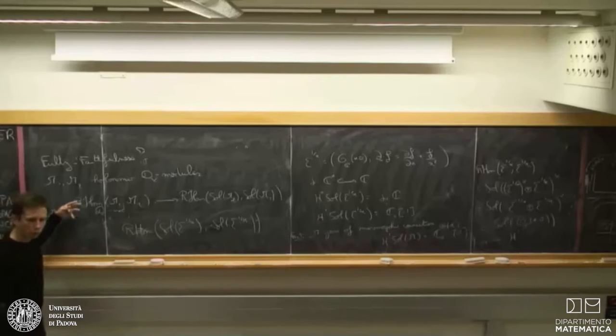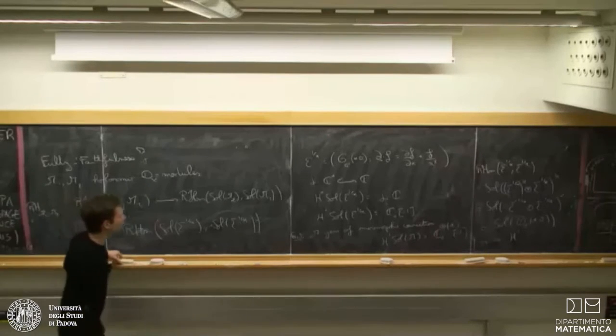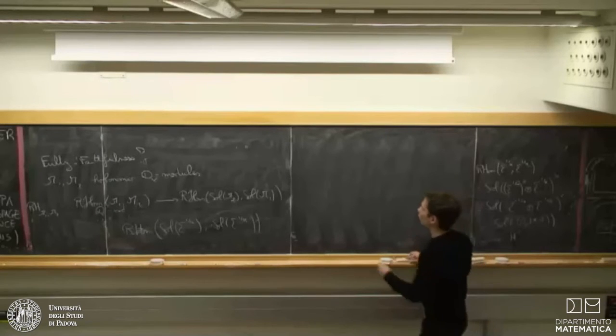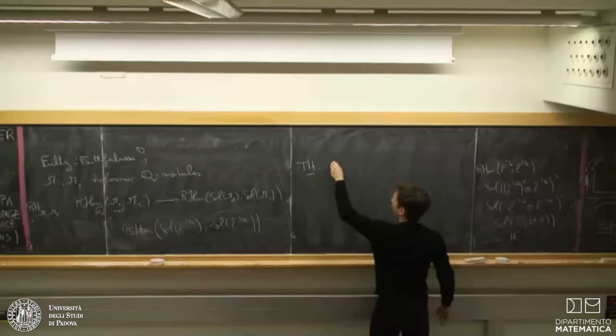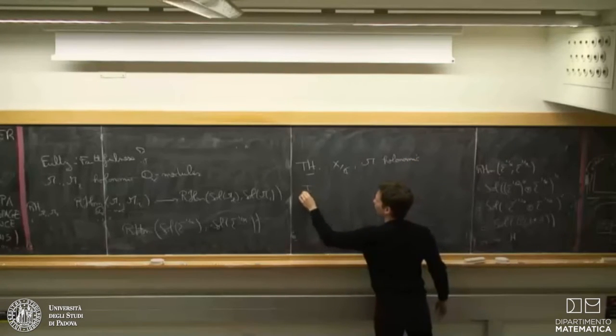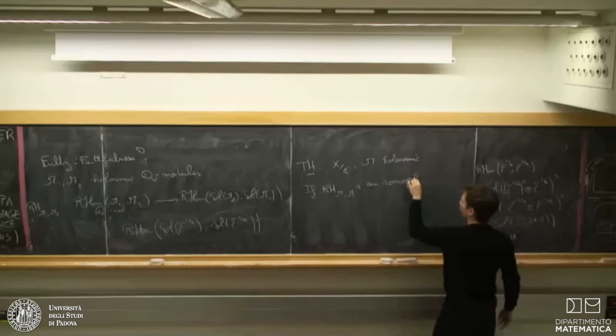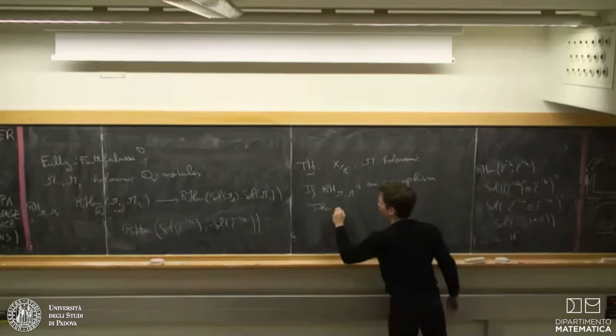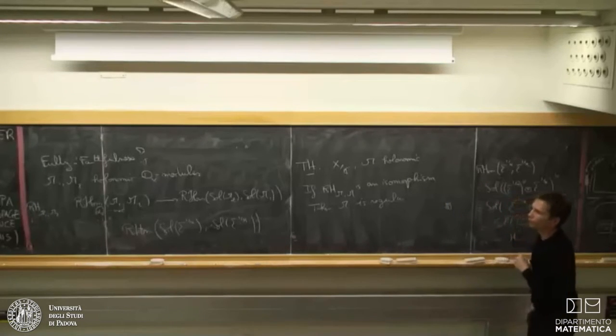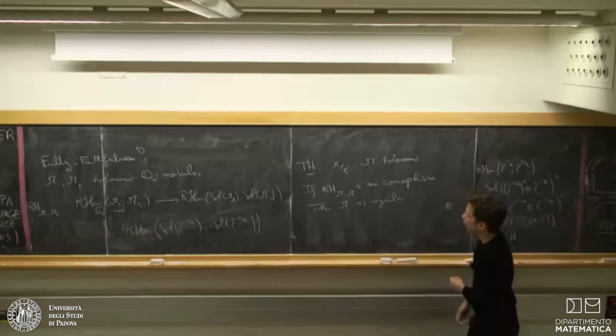And why is it not an isomorphism? It's because we've got a Dirac in H1. And why is it so? This is because our module is irregular. So, from this example, it seems that the only obstruction for the Riemann-Hilbert morphism to be an isomorphism is the irregularity. So, this is not only an observation, this is a theorem. So, this is a theorem that for X over C and M holonomic, if the Riemann-Hilbert morphism is an isomorphism, then M has to be regular.